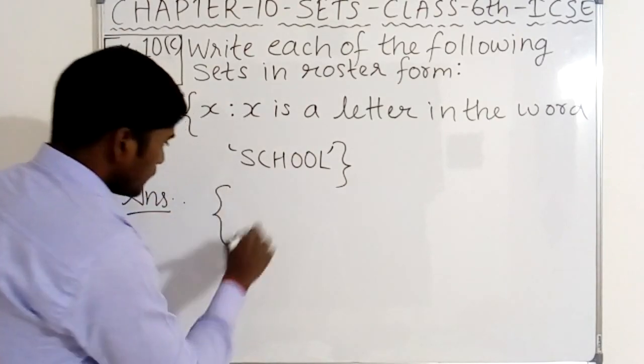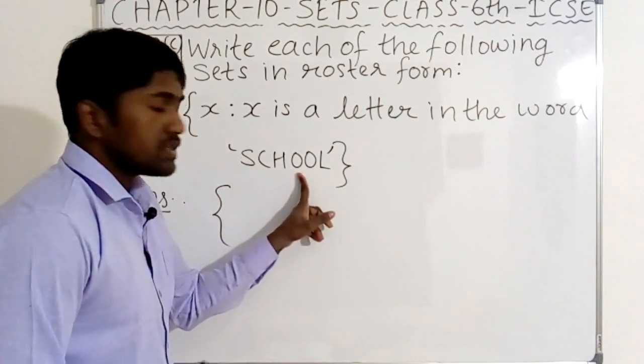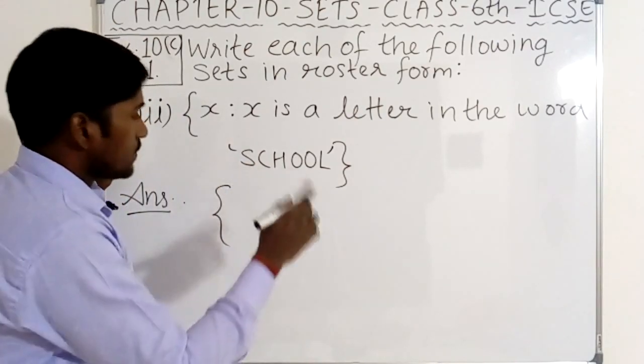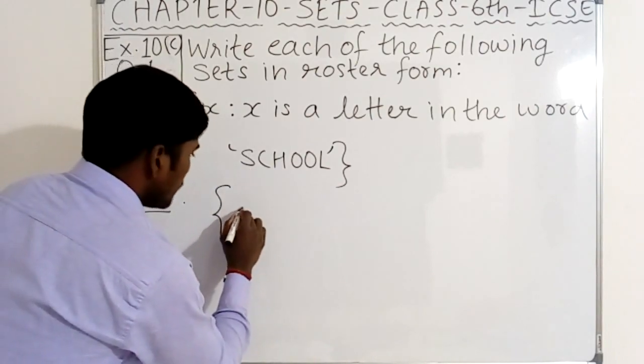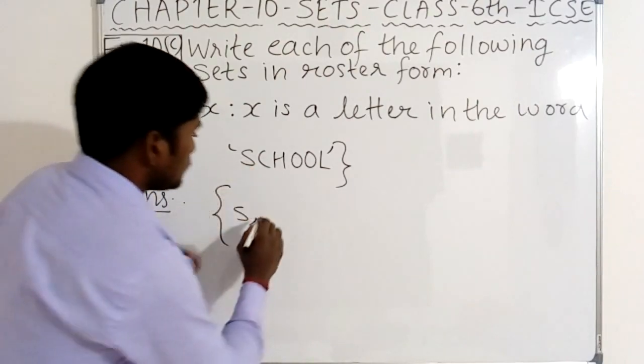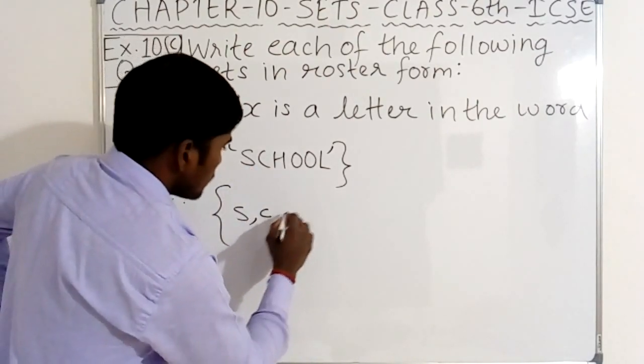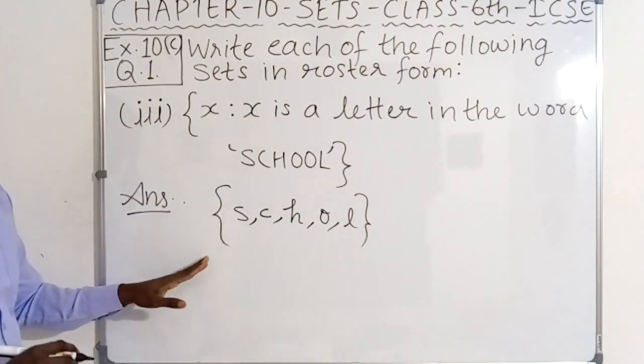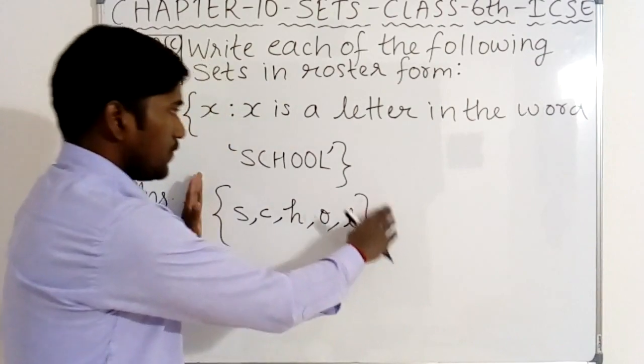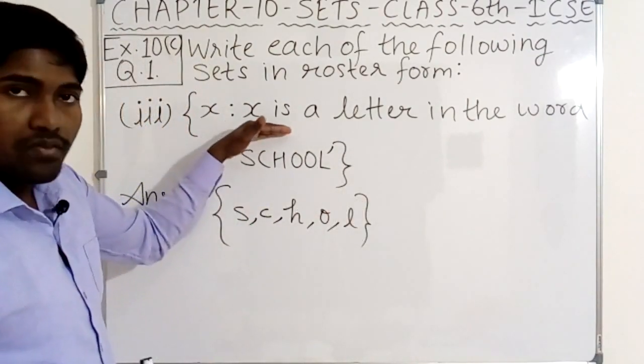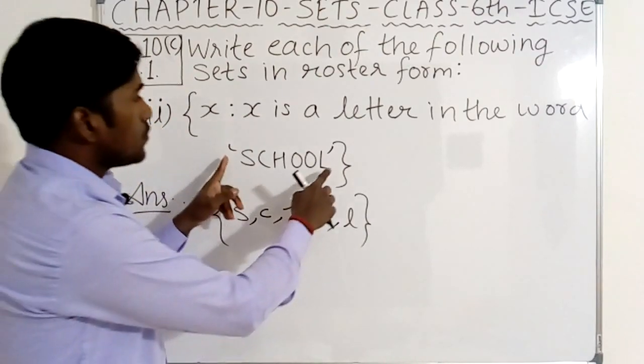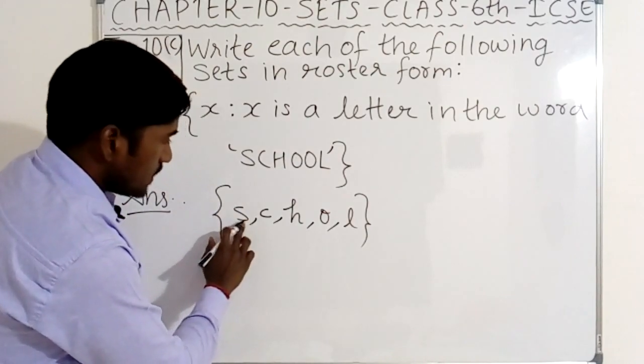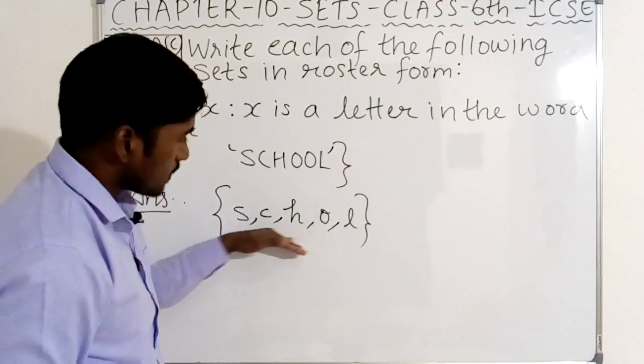So what you have to do, firstly you have to make curly braces open, then you have to write each letter of this word in small letters and don't repeat one letter more than one time. Here we have to write S is the first letter, so here we have to write S in small letters. Then second letter is C, small c, H, then O small o, then L small l. This is the representation of this set in roster form. This set builder form is now the roster form. School word letters set: small s, then small c, then h, then o, then l, all these letters are separated by comma.